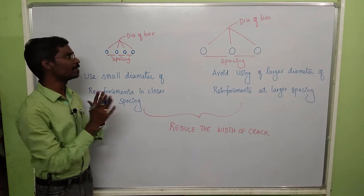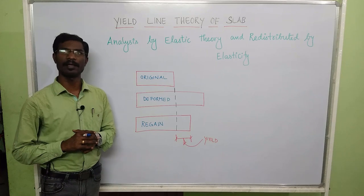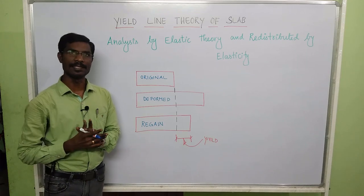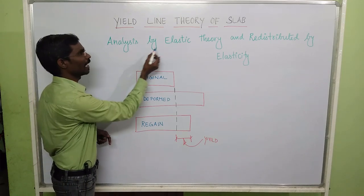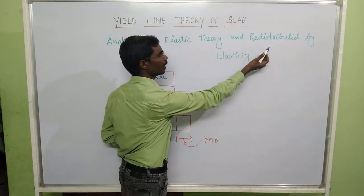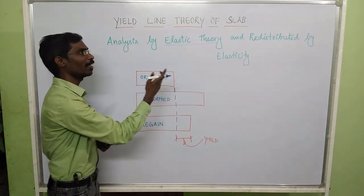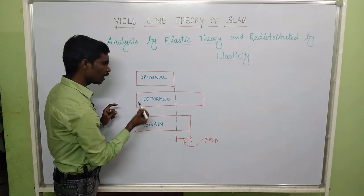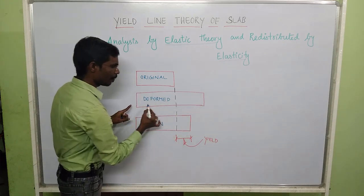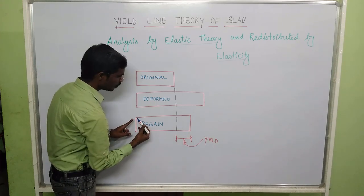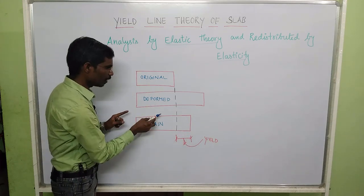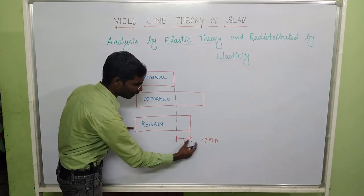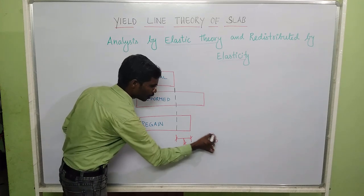The last topic in this video: yield line theory of slab. In yield line theory, the concept is analyzed by elastic theory and redistributed by inelasticity. The original length of the slab, after deformation, changes to a deformed length, and after regaining, returns to a certain length. The difference between the deformed length and the regained length — the remaining portion — is called the yield. This is called the yield portion of the slab, and this concept is used for yield line theory of slab.